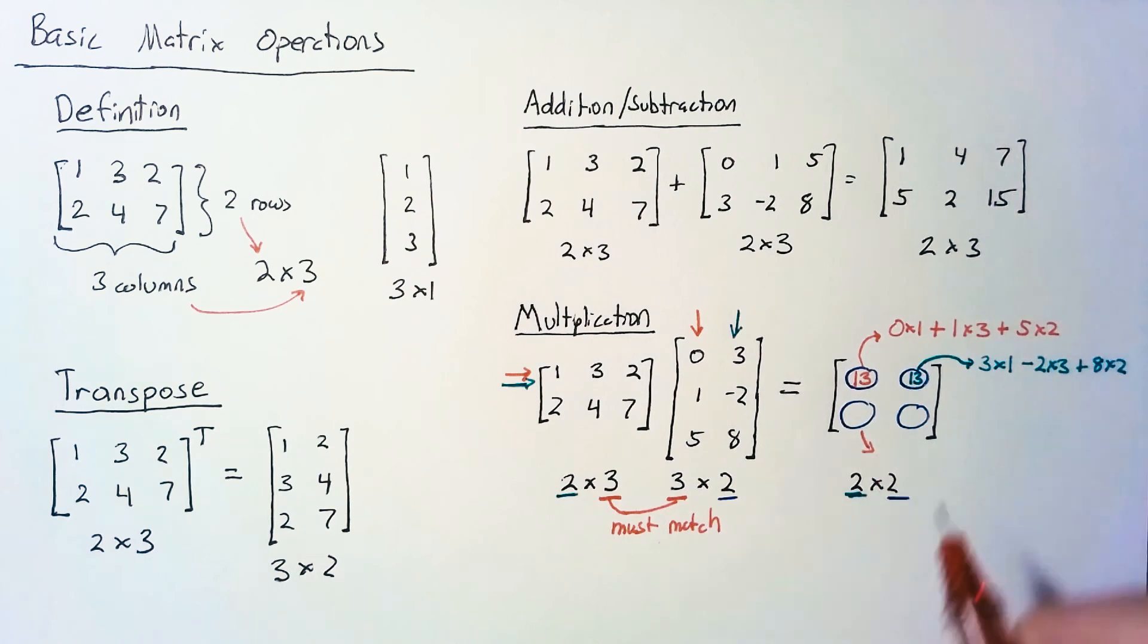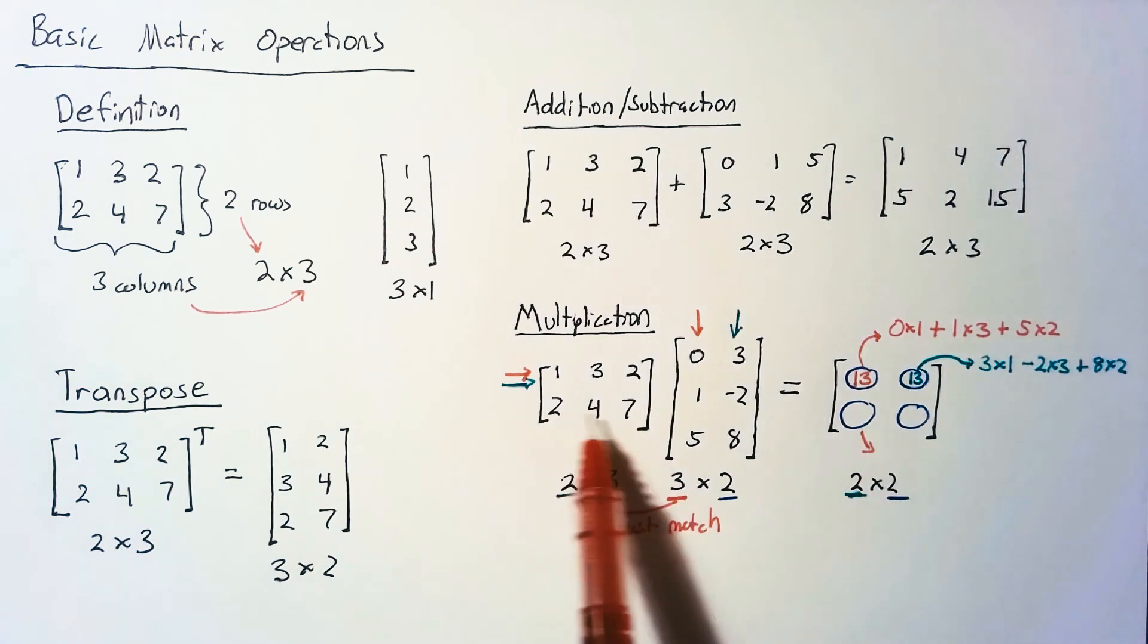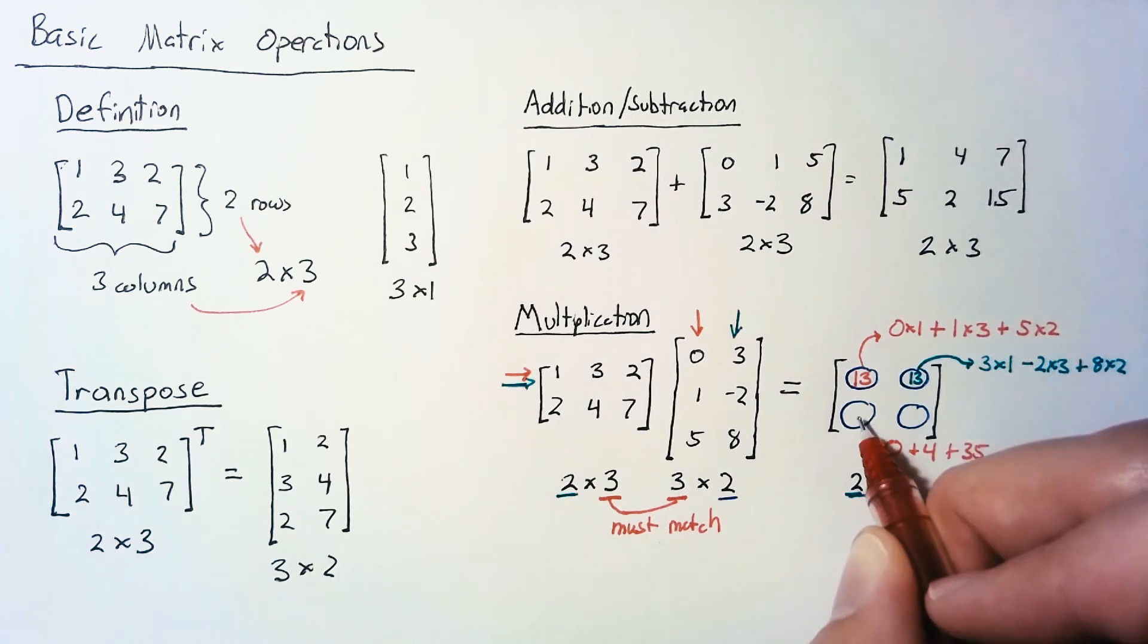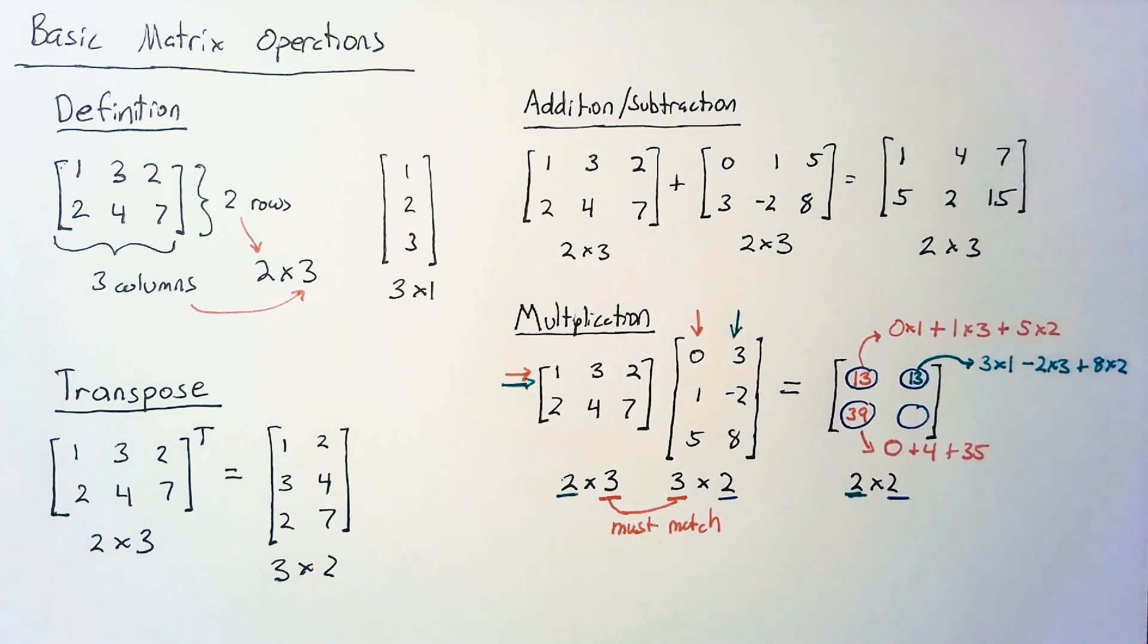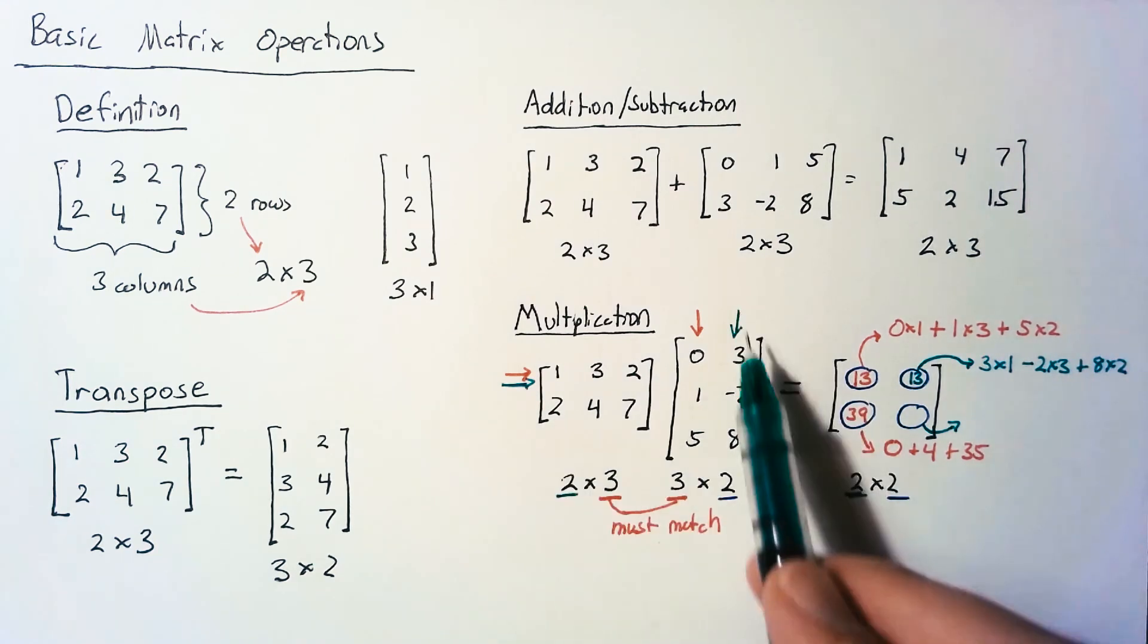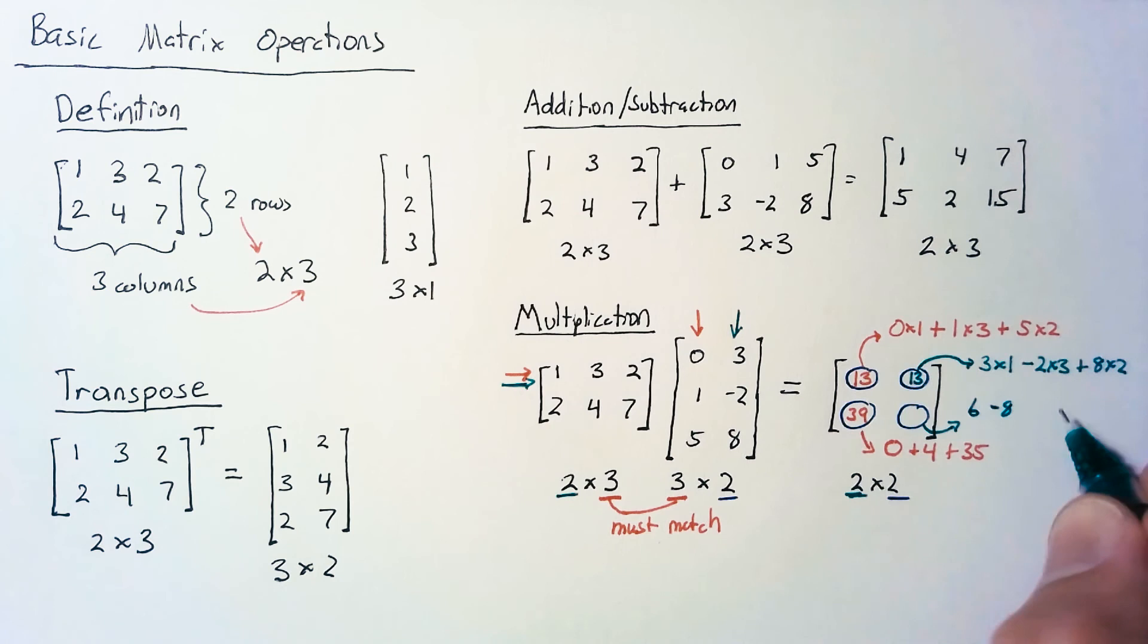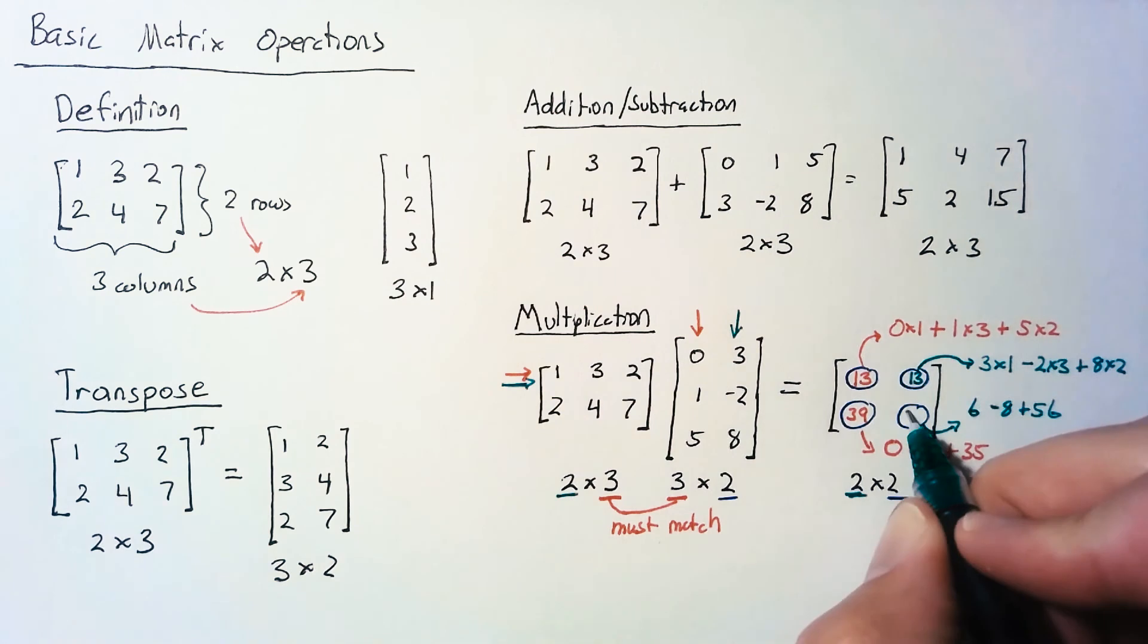For the bottom left, we're looking at the second row and first column. We end up with 0×2, which is zero, 1×4=4, and 7×5=35, so we end up with 39 for that element. Finally, we're looking at the second row and second column. We have 3×2=6, -2×4=-8, and 8×7=56, so we end up with 54.